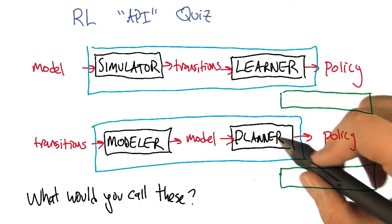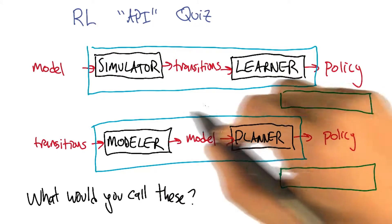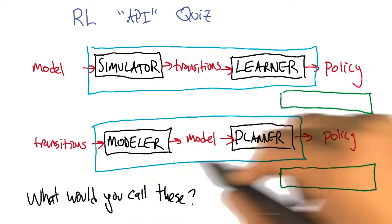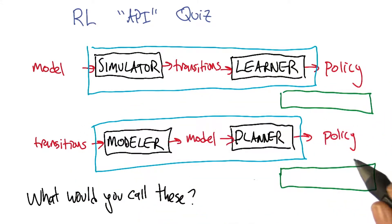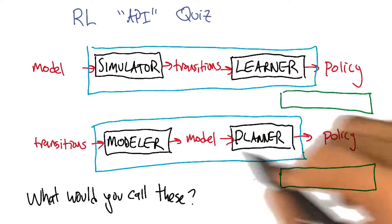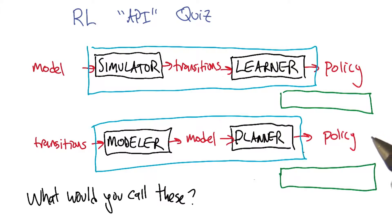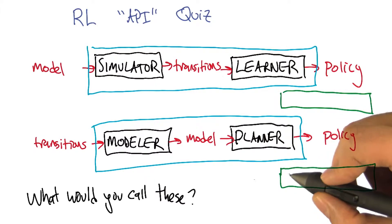Well, it's not a planner. I mean, the planner's inside of it. That's true. The overall system, this sort of blue box turns transitions into policies, so it's a kind of reinforcement learner. But it's one that builds a model inside. I would call that model based learning or model based planning.